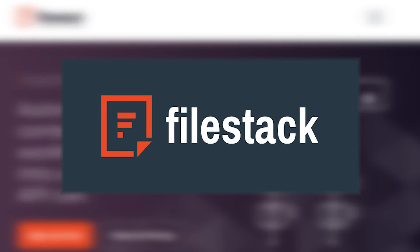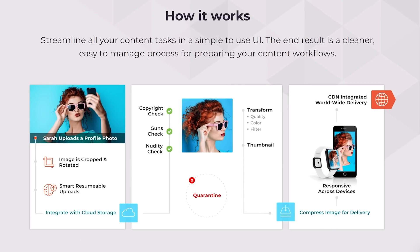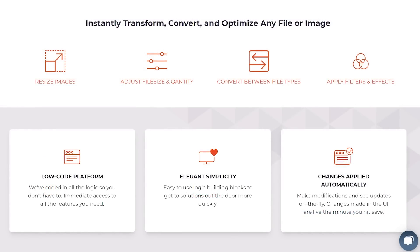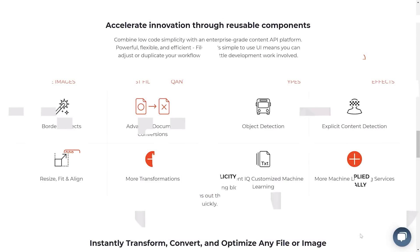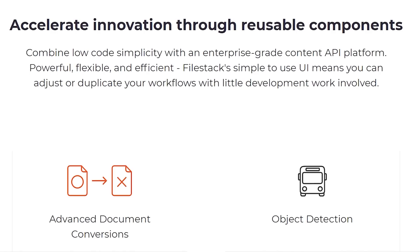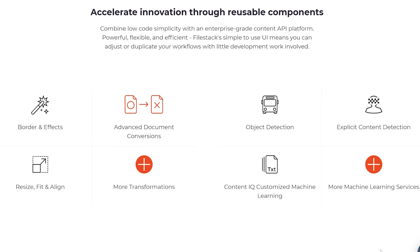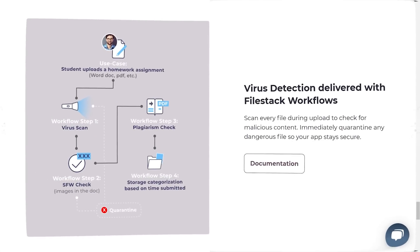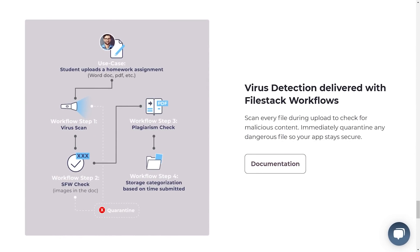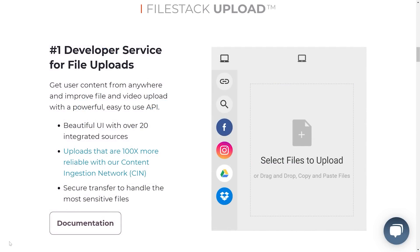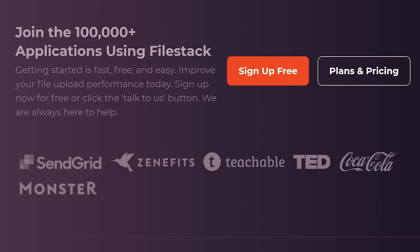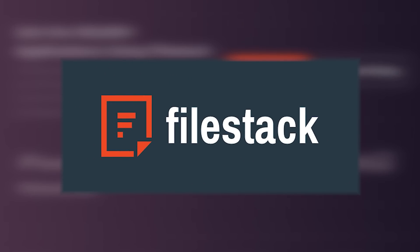Before we get started, I need to thank FileStack for sponsoring this video. FileStack lets you simplify your file handling by providing a simple file uploader and powerful APIs to upload, transform, and deliver any file into your app. With FileStack, you can accelerate innovation through reusable components and automate content workflow tasks into a single API call. FileStack can handle borders and effects, document conversions, object detection, explicit content detection, and much more. Over a hundred thousand people are currently using FileStack — you can join them today for free by clicking the link in the description.